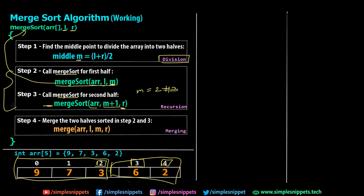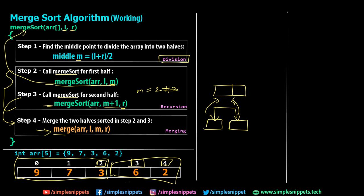When the recursion stops — when we can no longer divide a sub-array with only one element — we call the merge function in Step 4. The merge function takes the smaller sub-arrays of size one, compares them, and combines them into larger arrays. When building back up, if we have 9 and 7, we compare: 9 is greater than 7, so 7 comes first, then 9. This logic is in the merge function.